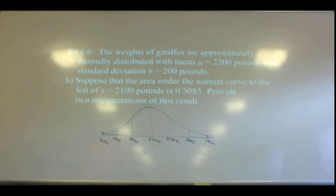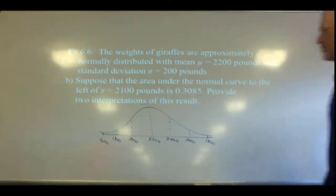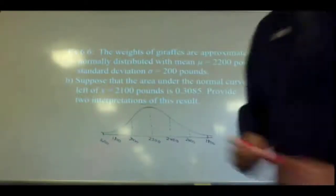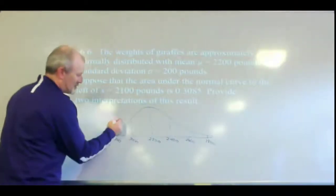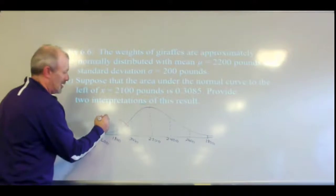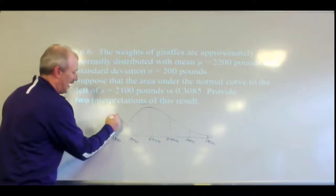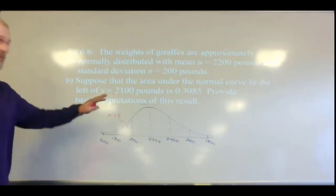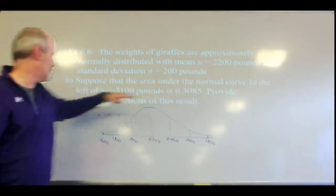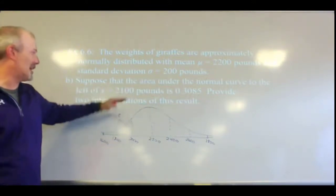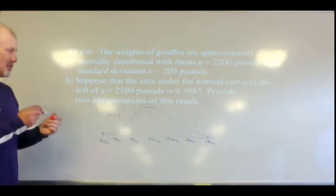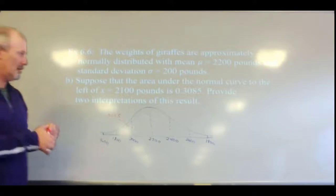Suppose that the area under the normal curve to the left of 2,100 pounds is 0.3085. So they're telling us that the part shaded in green is 0.3085. Provide the two interpretations of this result.